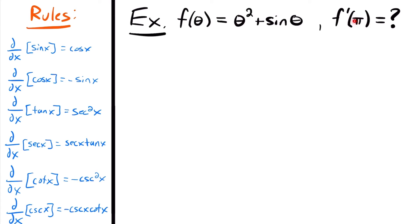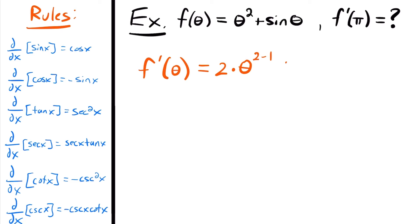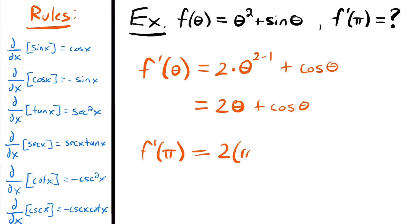To find the slope at π, we first find f′(θ). Using the power rule on θ², we get 2θ. The derivative of sin(θ) is cos(θ), so f′(θ) = 2θ + cos(θ). Evaluating at π: f′(π) = 2π + cos(π) = 2π + (−1) = 2π − 1. That is the slope of the function at θ = π.